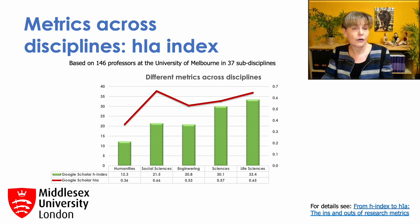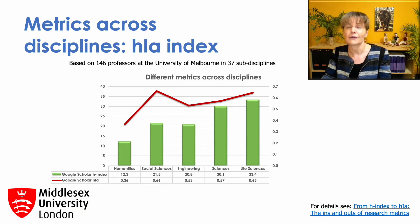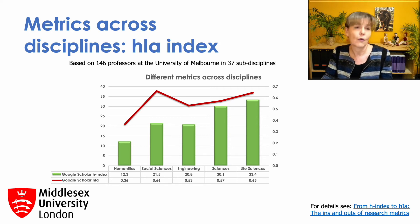Only the humanities is still showing lower metrics. However, rather than being a third of the life sciences, as for the H-Index, it's now more than half of the life sciences.